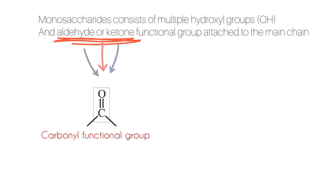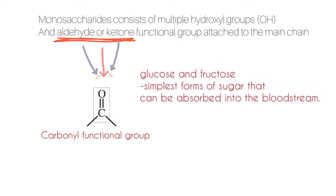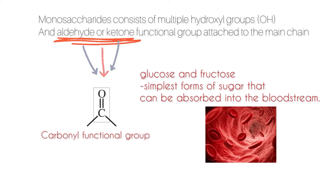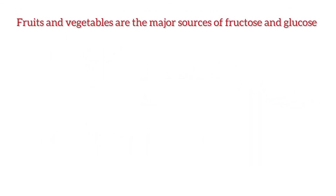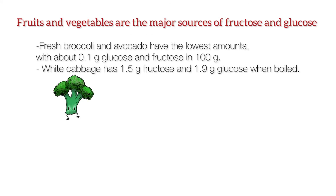Monosaccharides consist of multiple hydroxyl groups and an aldehyde or ketone functional group attached to the main chain. Common monosaccharides include glucose and fructose. These are the simplest forms of sugar that can be absorbed into the bloodstream.